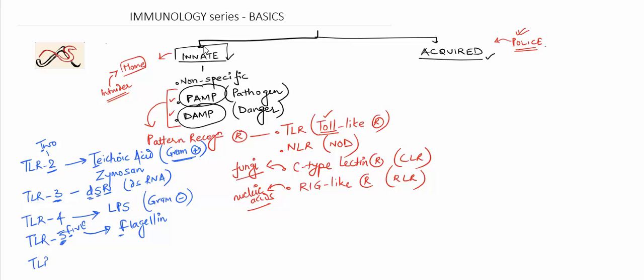Lastly is TLR9. 9 is a big number. So this responds to several CG repeats that are present in several bacteria. CG repeats are recognized by TLR9. So these are some TOL-like receptors and the particular molecular patterns that they detect.